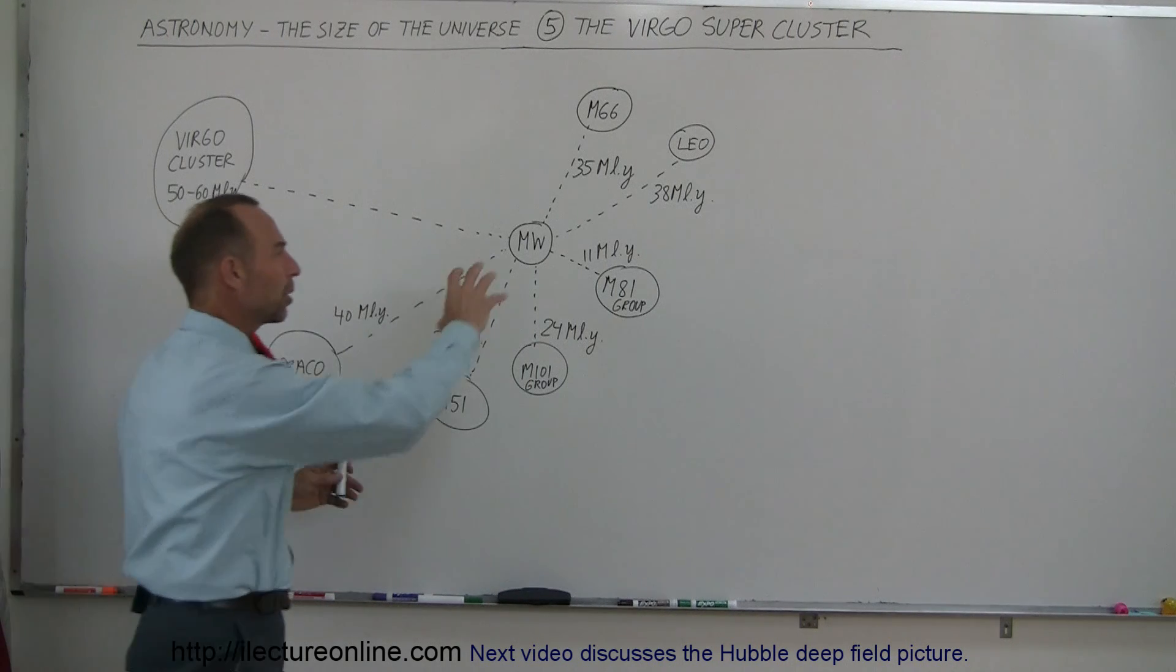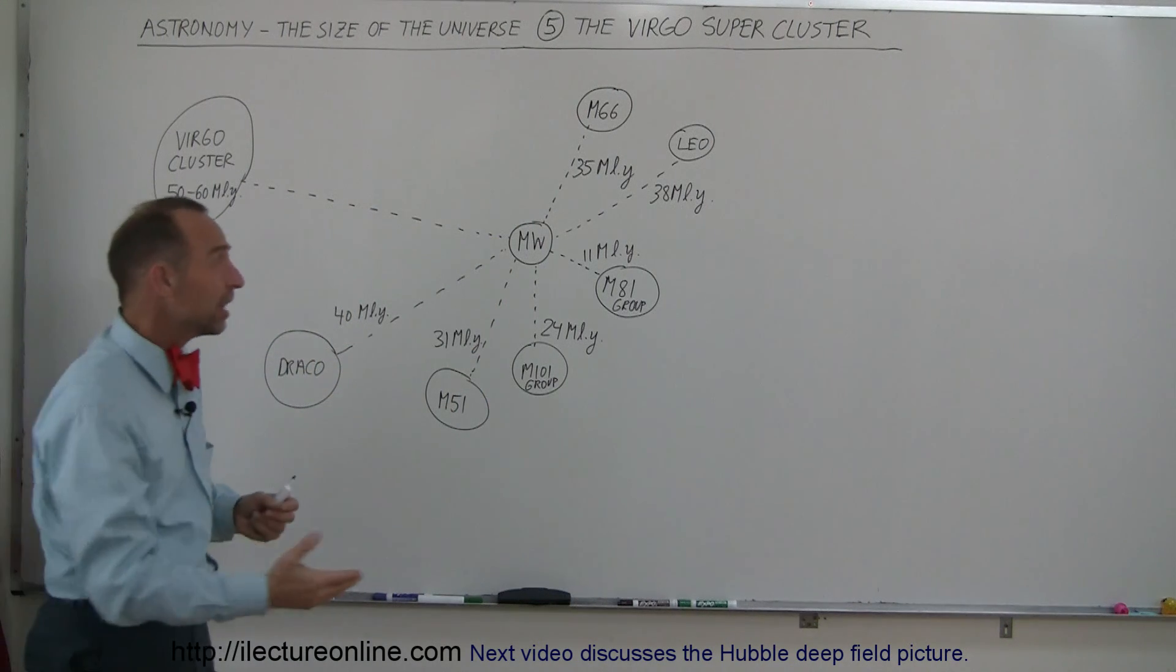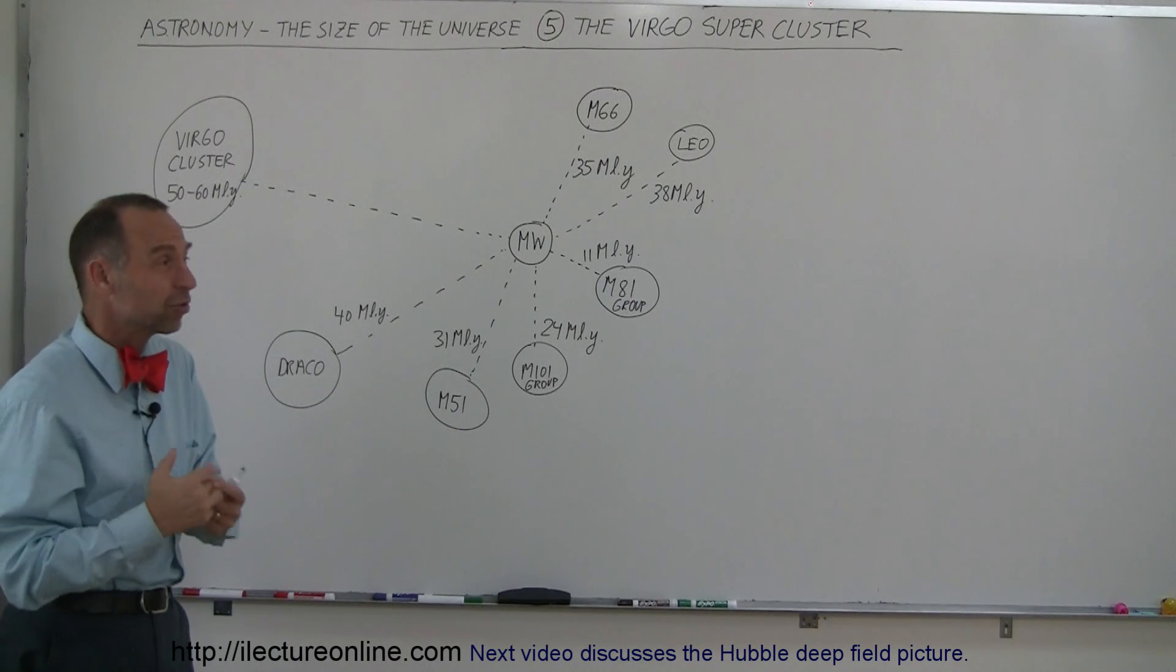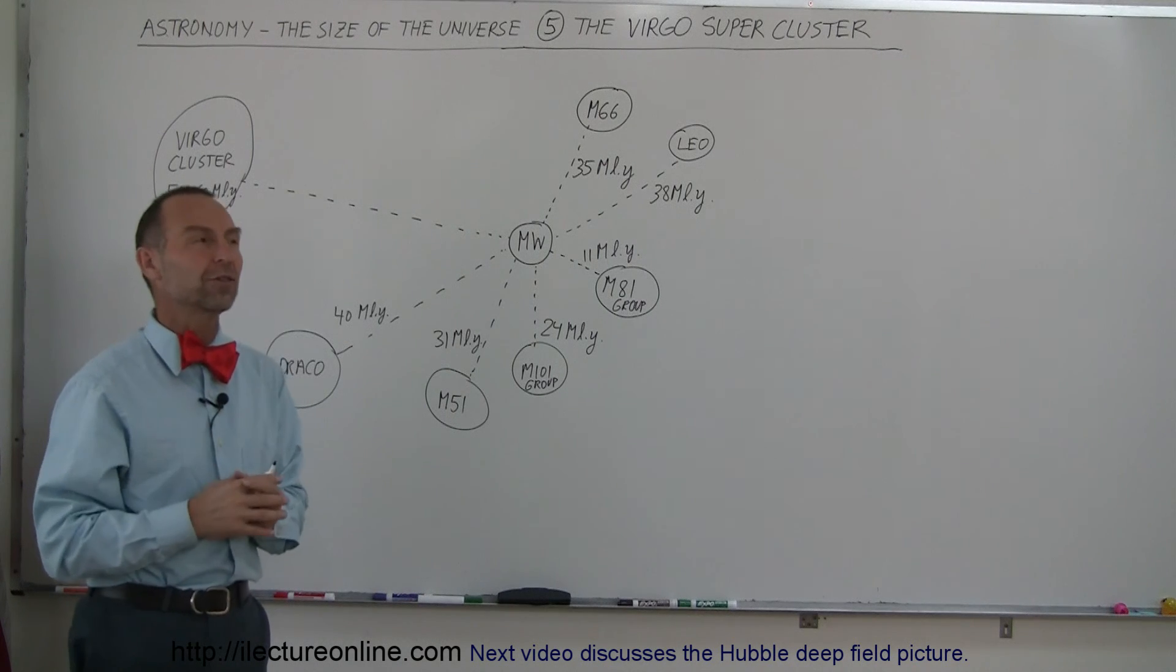So here we have what we call a local group of galaxies with 54 galaxies in them, each containing billions of stars, and the big ones, like the Milky Way galaxy, as many as 250 billion stars. Some galaxies are so big, they have as many as over a trillion stars in them.